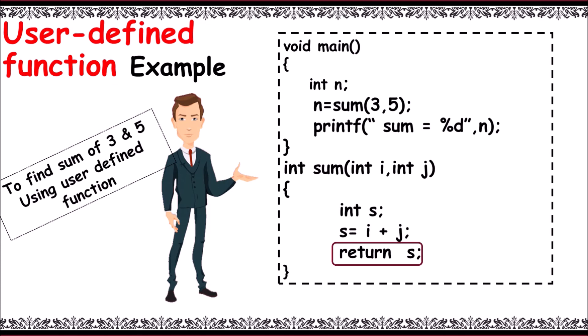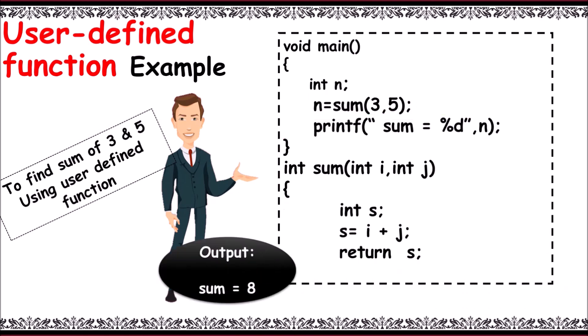That is, s. The function returns s value as 8 to the call function. Then, 8 is stored in n. Then, it prints output sum equals 8.